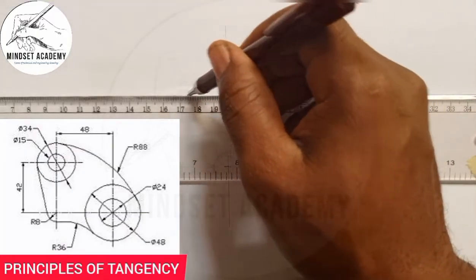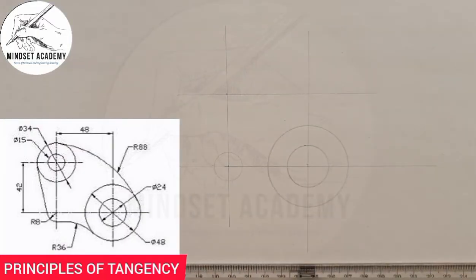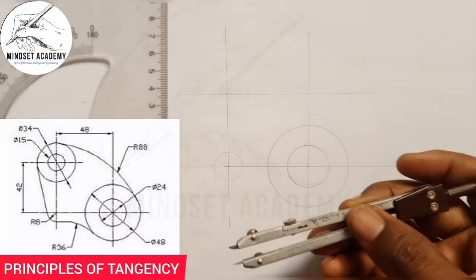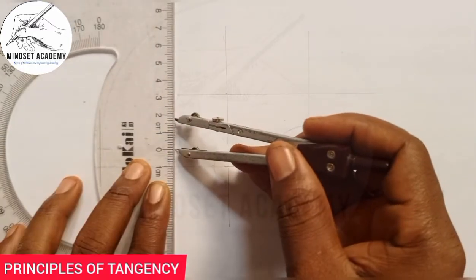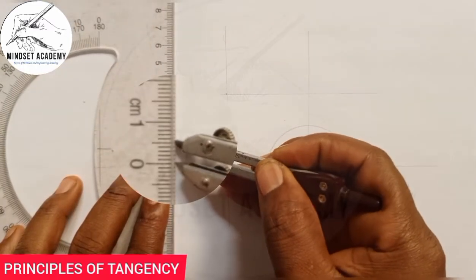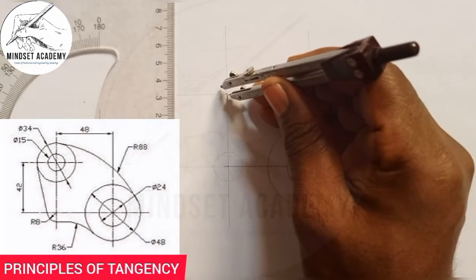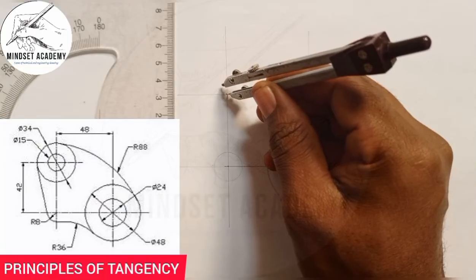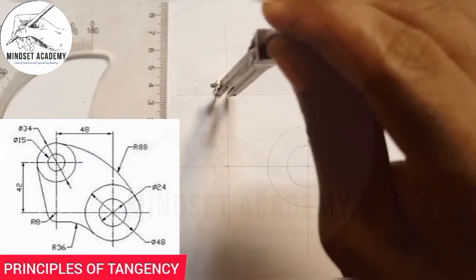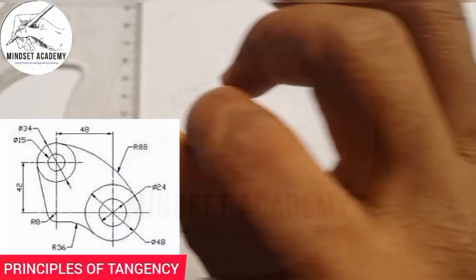From that point, the inner circle has a diameter of 15. I need half of it, which is 7.5. I measure 7.5 on my meter rule — 0, 5, 6, 7.5 — place it at the center, and draw a circle.